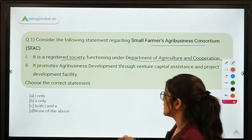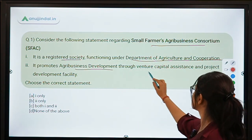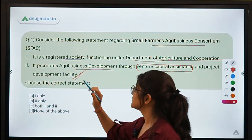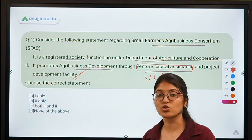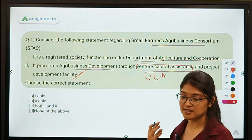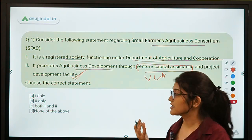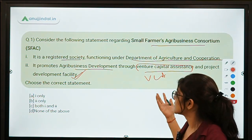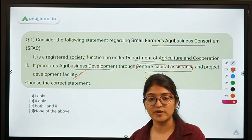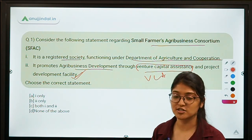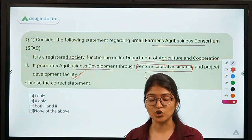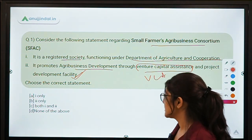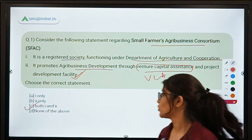The second statement says it promotes agri business development through venture capital assistance and project development facilities. Agricultural enterprises are supported through Venture Capital Assistance. VCA is basically a credit-based or loan-based assistance. SFAC supports agricultural entrepreneurs while implementing their projects — if they meet some shortfall in money, SFAC provides that. So this one is also correct. The correct option here is C, that is both 1 and 2.